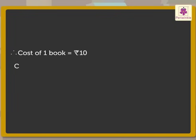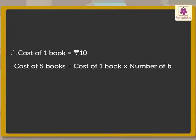Therefore, cost of 1 book is equal to rupees 80 divided by 8 is equal to 10 rupees. Now, to find out the cost of 5 books, we multiply the cost of 1 book into number of books. Therefore, cost of 5 books is equal to rupees 10 into 5, which is equal to rupees 50. We got the answer.